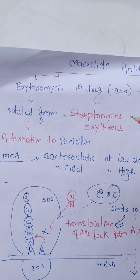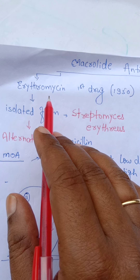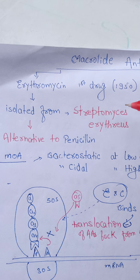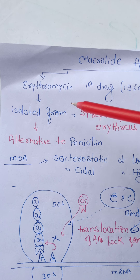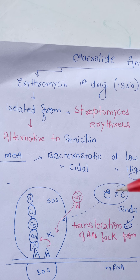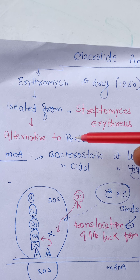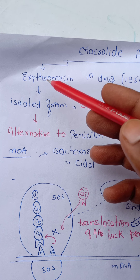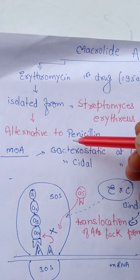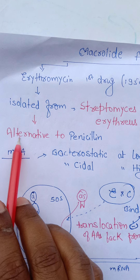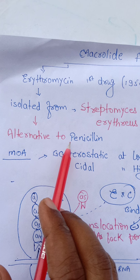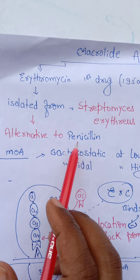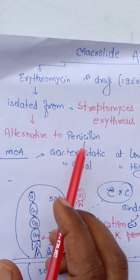The first drug under the macrolide group antibiotics is erythromycin. Erythromycin is the first drug; it was used in 1950 and this drug is isolated from Streptomyces erythraeus. This erythromycin is alternative to penicillin group. As we know, P for penicillin and P for gram-positive bacteria — penicillin is very much active against gram-positive bacteria. In the same manner, erythromycin is also very much active against gram-positive bacteria.